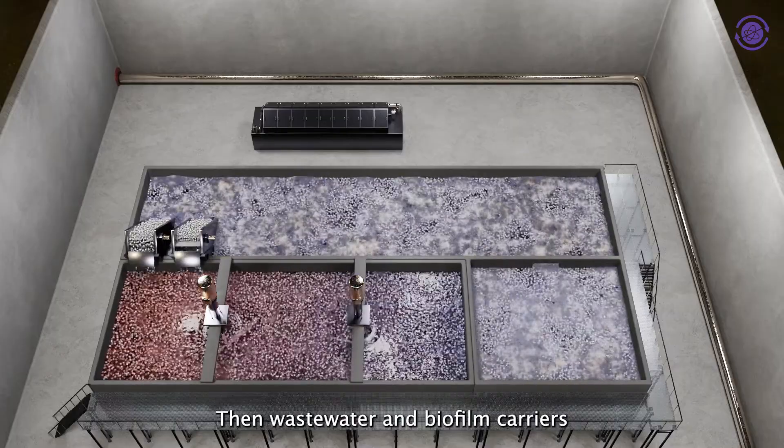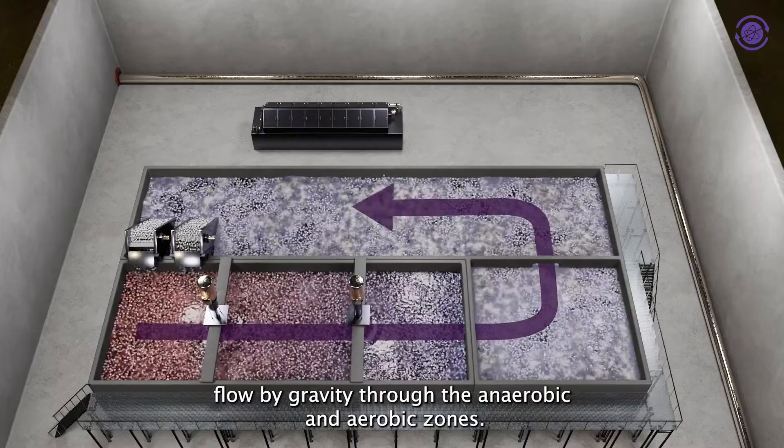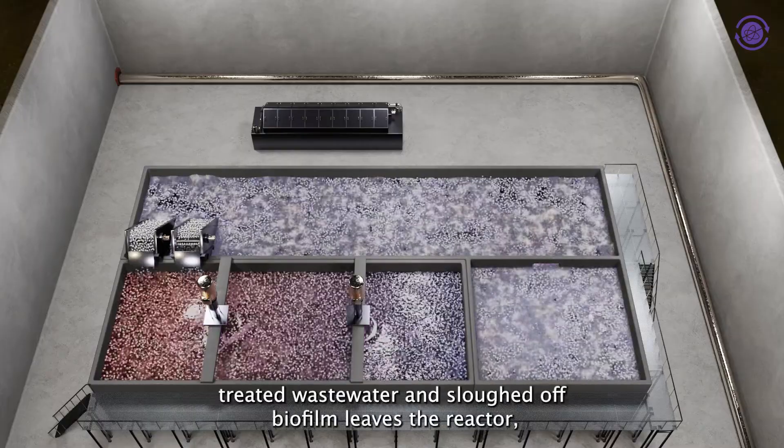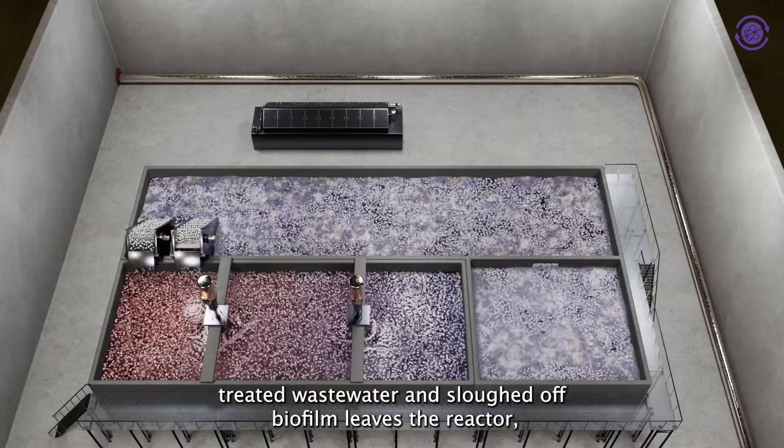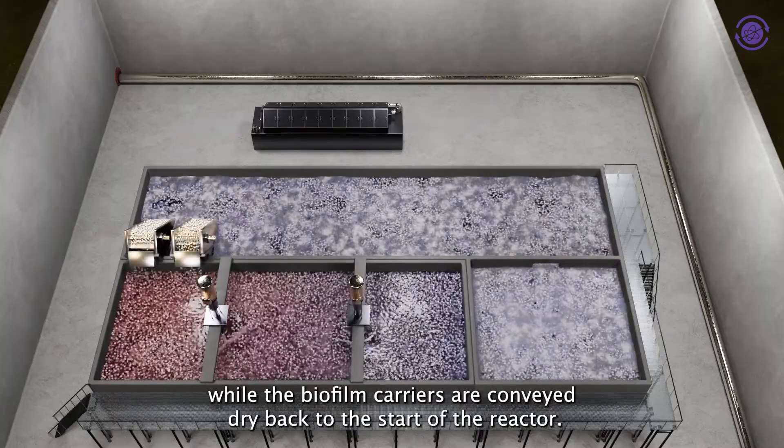Then wastewater and biofilm carriers flow by gravity through the anaerobic zones. At the end of the reactor, treated wastewater and sloughed off biofilm leaves the reactor while the biofilm carriers are conveyed dry back to the start of the reactor.